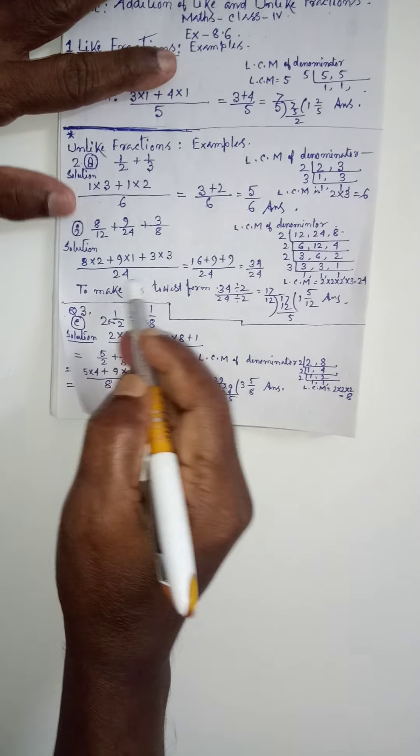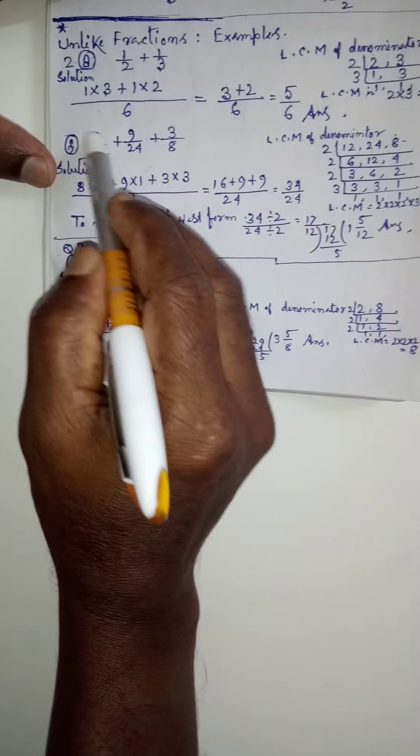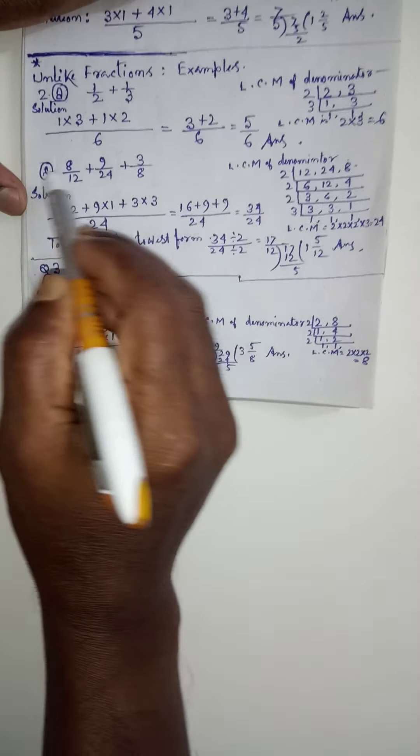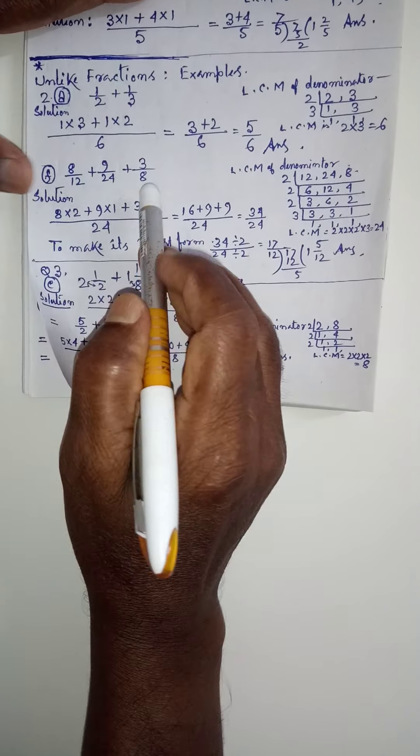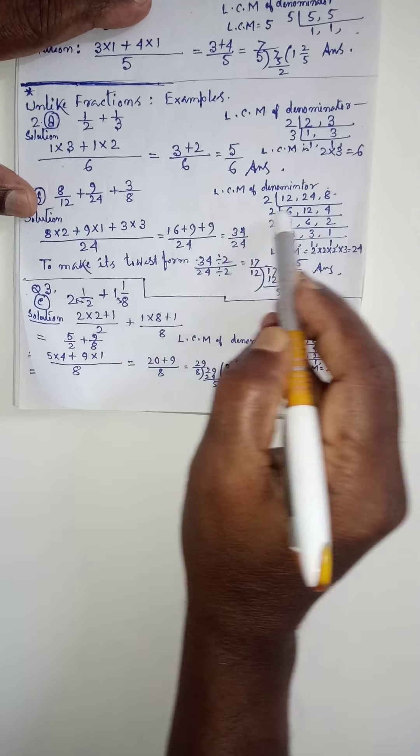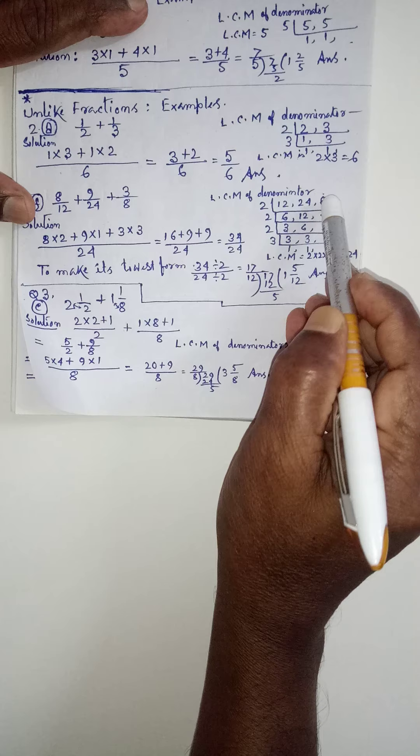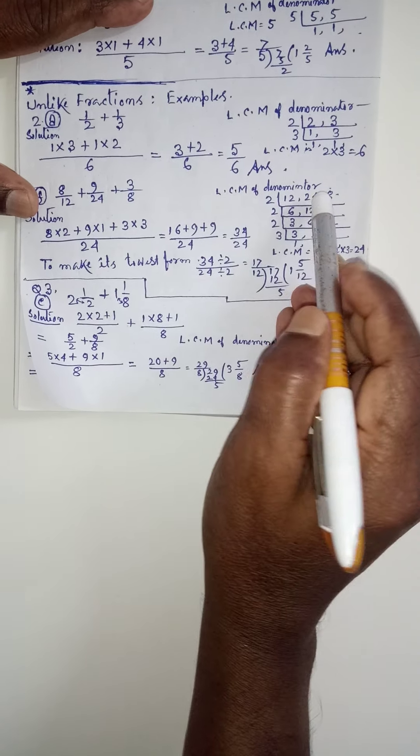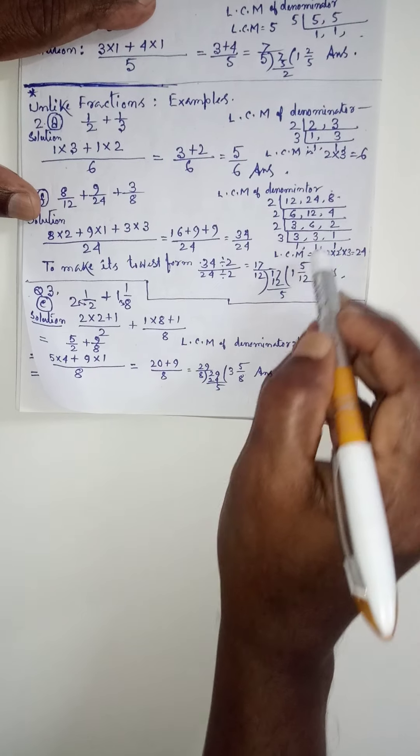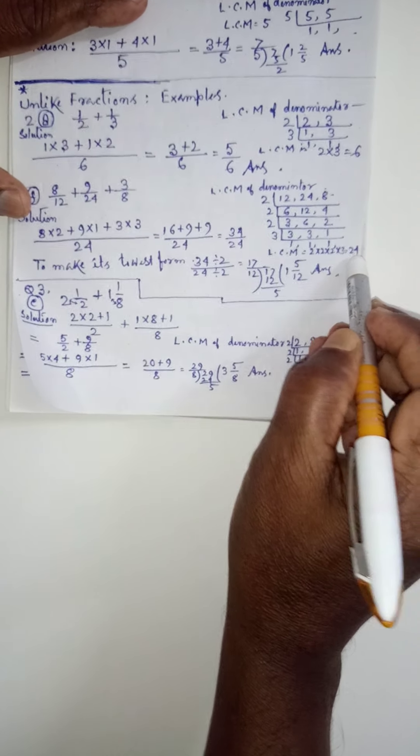See, next example. See, 8 by 12, 9 by 24, 3 by 8. This 3 fraction we have to add. So, numerators, denominators are those 12, 24 and 8. We have to find out LCM. In the previous classes, same way, we have find out that LCM. LCM here comes 24.